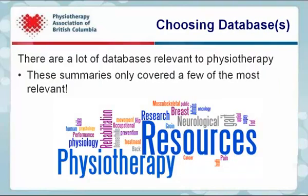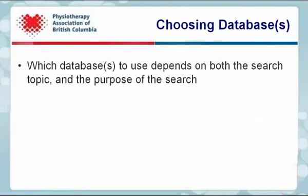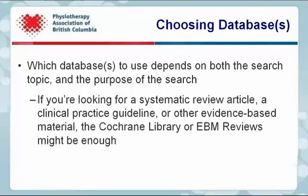There are a lot of databases relevant to physiotherapy, and these summaries have only covered a few of the most relevant. So which of these databases should you use? This depends on both the search topic and the purpose of the search. If you're looking for a systematic review article, a clinical practice guideline, or other evidence-based material, the Cochrane Library or EBM Reviews might be enough.